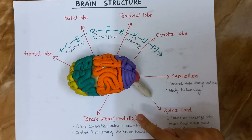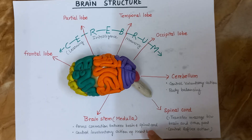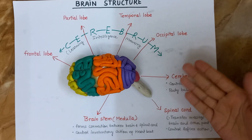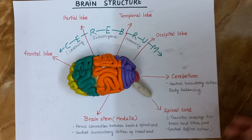Brainstem, which is also known as medulla. It forms a connection between the brain and spinal cord. It controls our voluntary actions like heartbeat and working of the lungs.